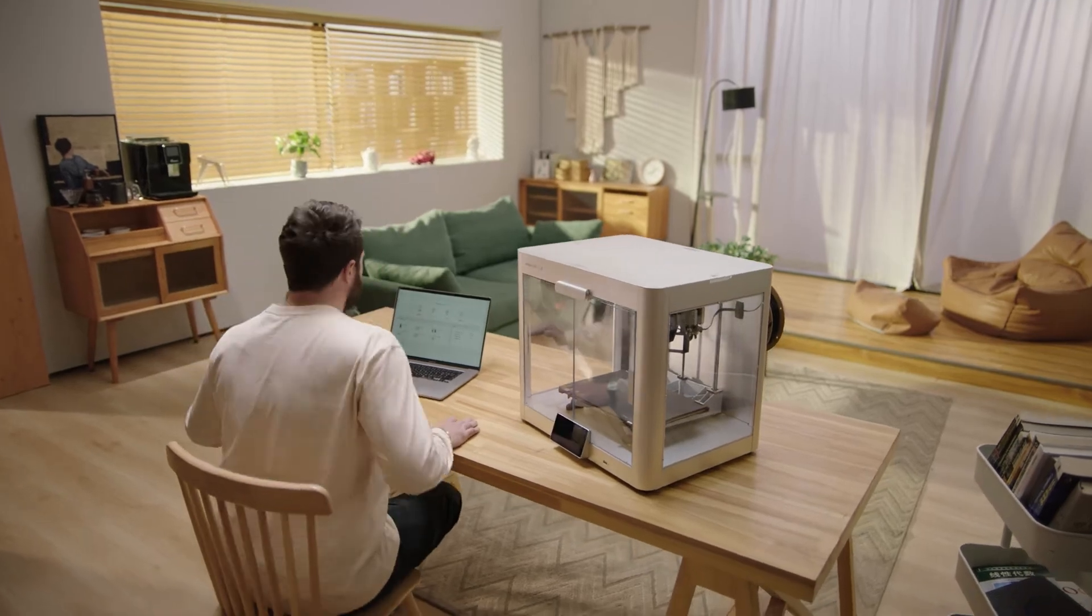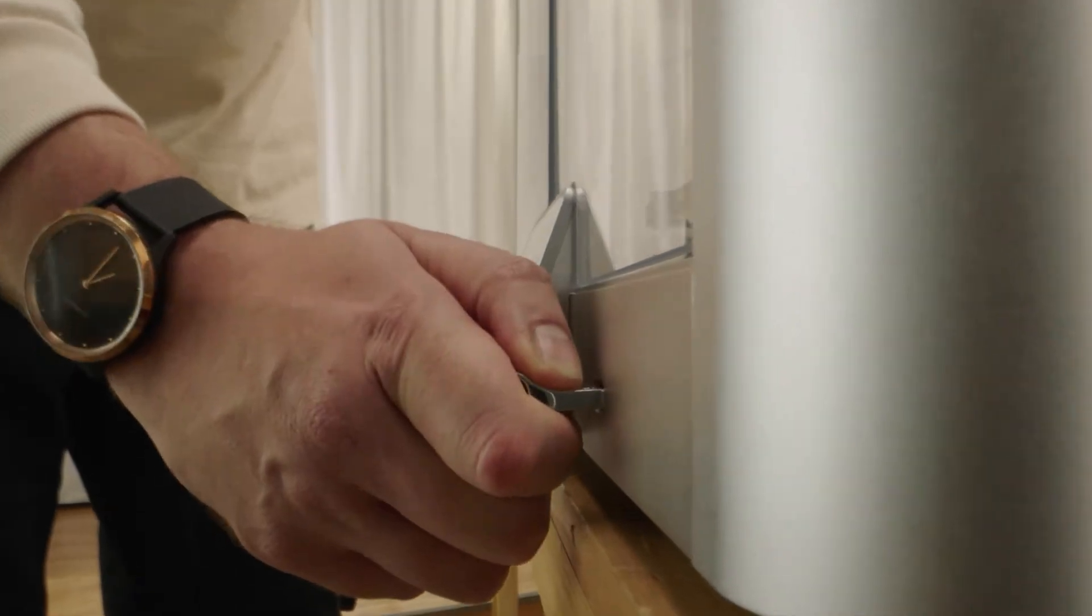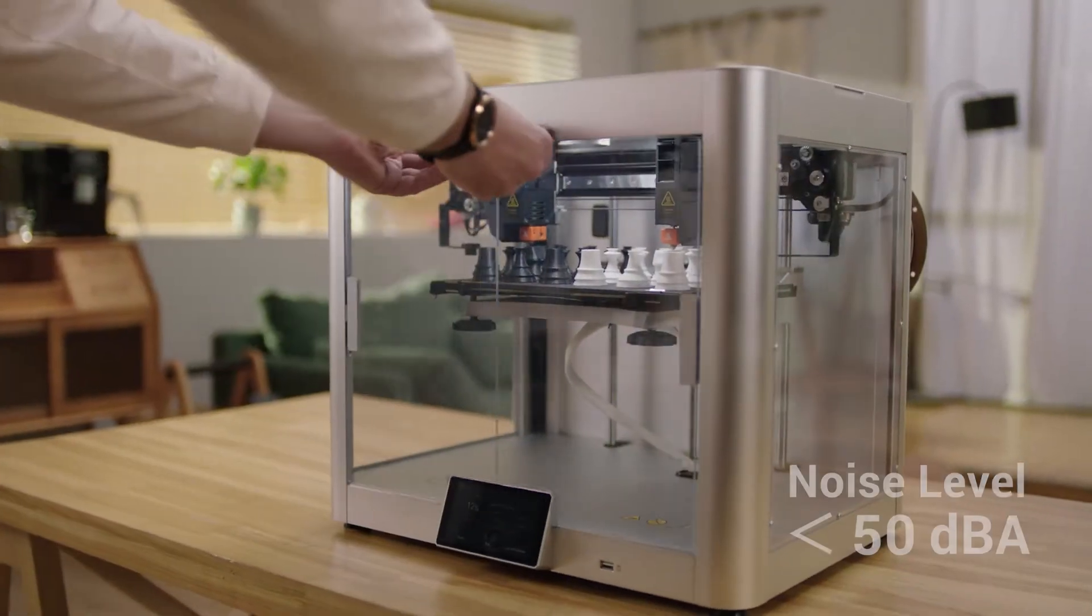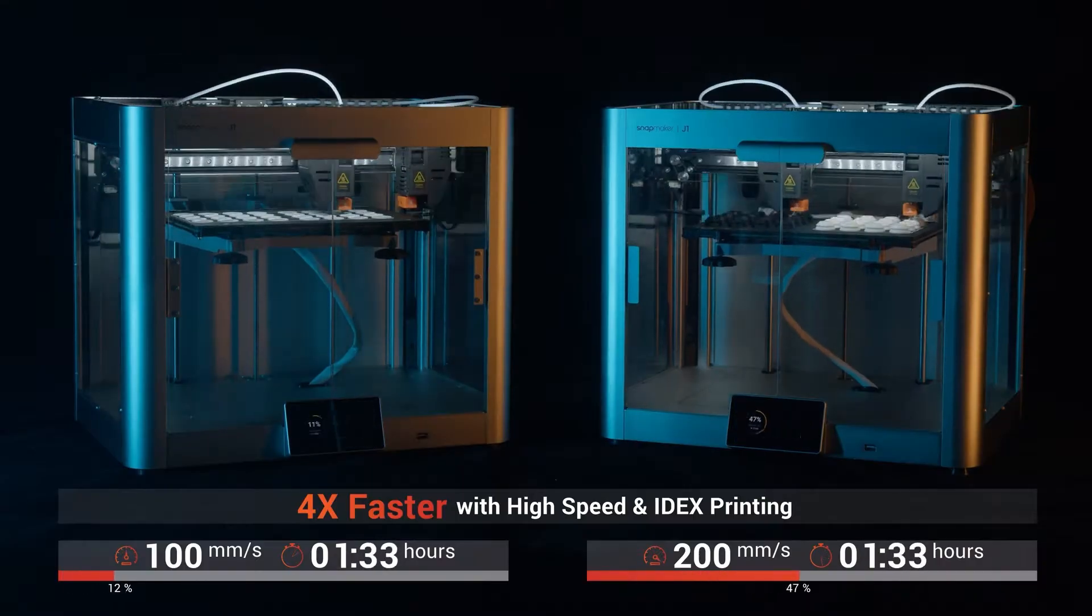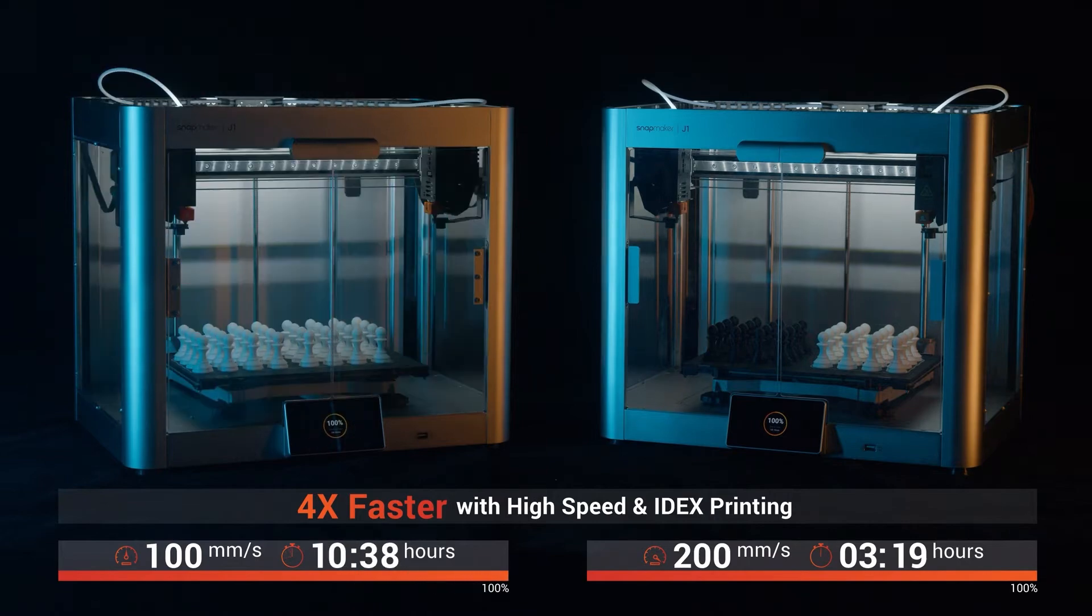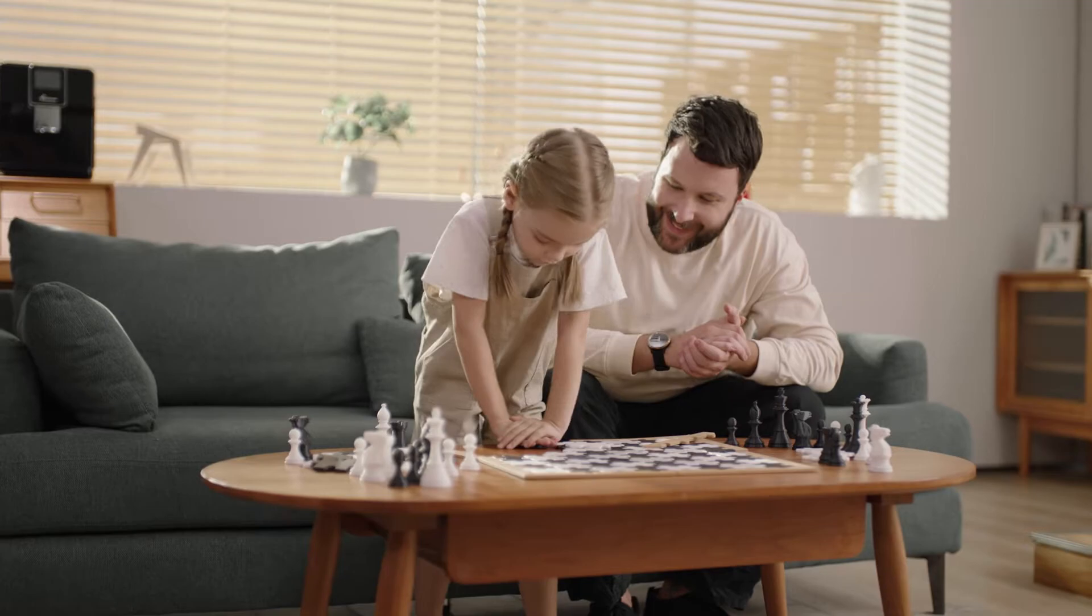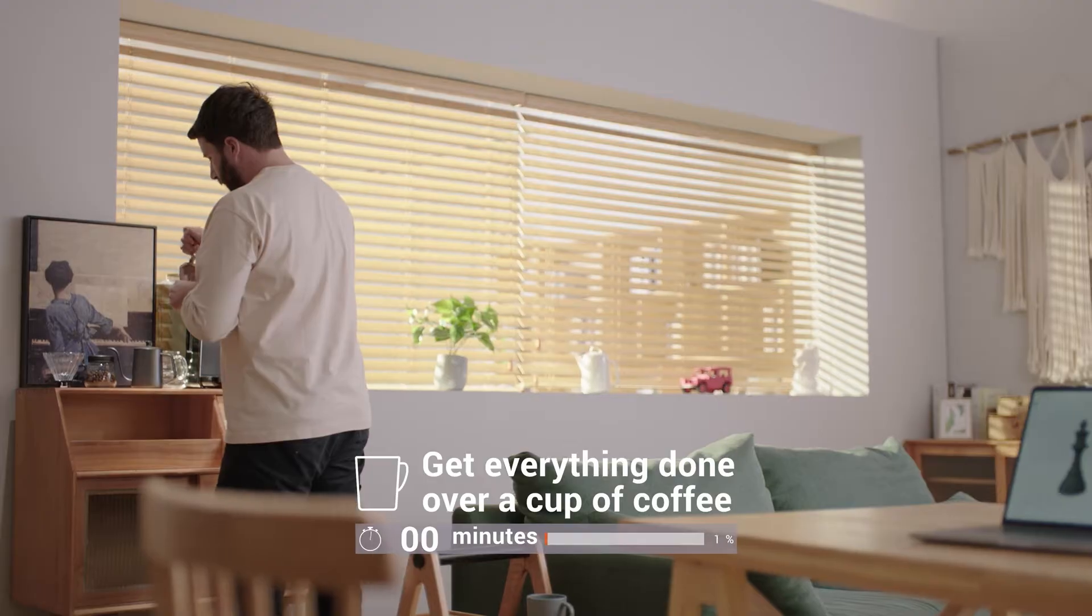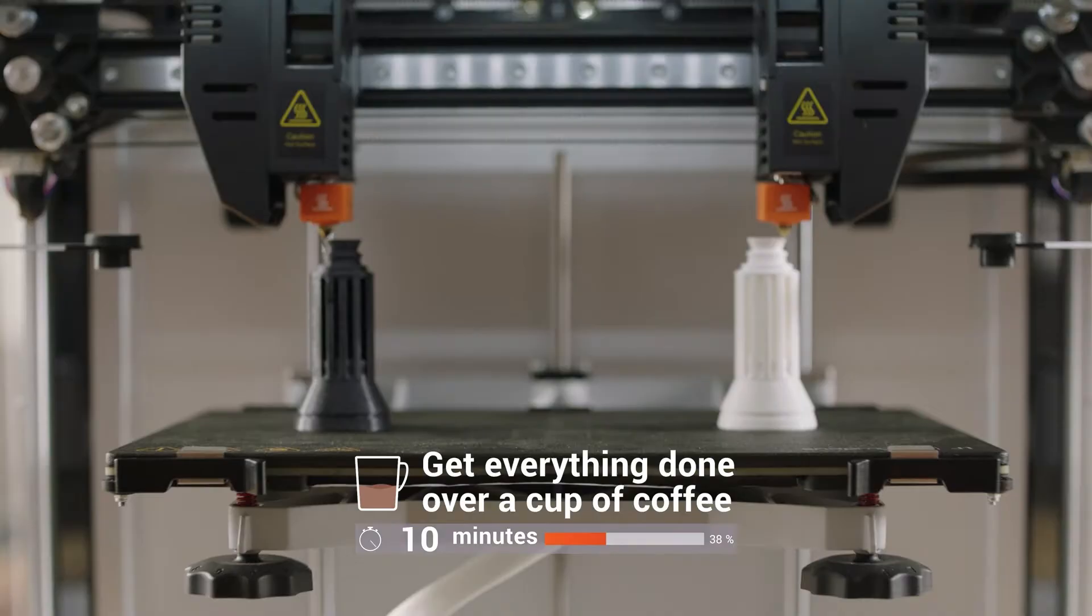The robust frame makes it an ideal choice for a wide variety of projects. The independent dual-extruder IDEX system takes your productivity to the next level. It allows for dual-material printing without contamination, and with copy mode and mirror mode, you can print two identical or mirrored objects simultaneously.